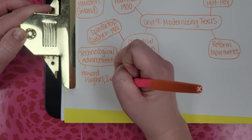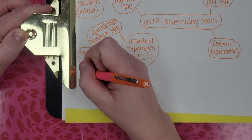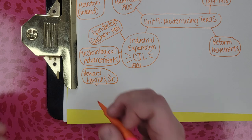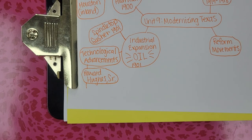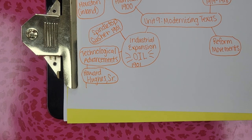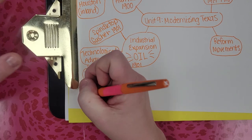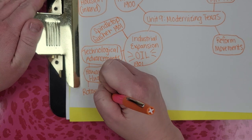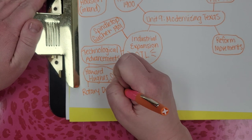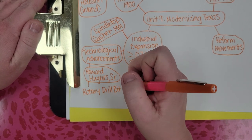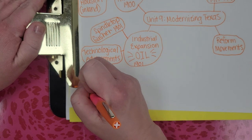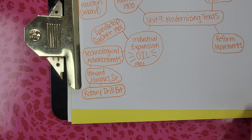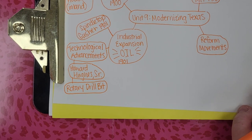This person is known as Howard Hughes Sr. — his son was also famous, so to clarify, that's a senior. Howard Hughes Sr. contributed to industrial expansion by creating the rotary drill bit, which drilled through rock at an angle. It was super revolutionary at the time — no one had thought of anything like that.